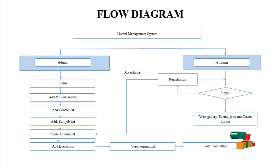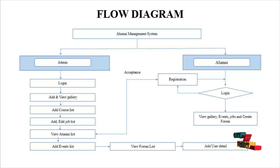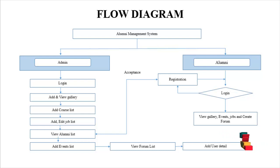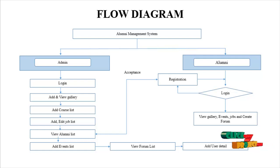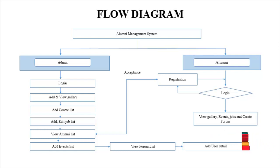This is the flow diagram of the Alumni Management System. Here we introduce two types of users: admin or college management, and alumni. First, I will explain the admin module. The admin should log in to this portal before starting their process. After logging in successfully, they can add or view gallery details, add the course list, add the job list, and view the admin list.